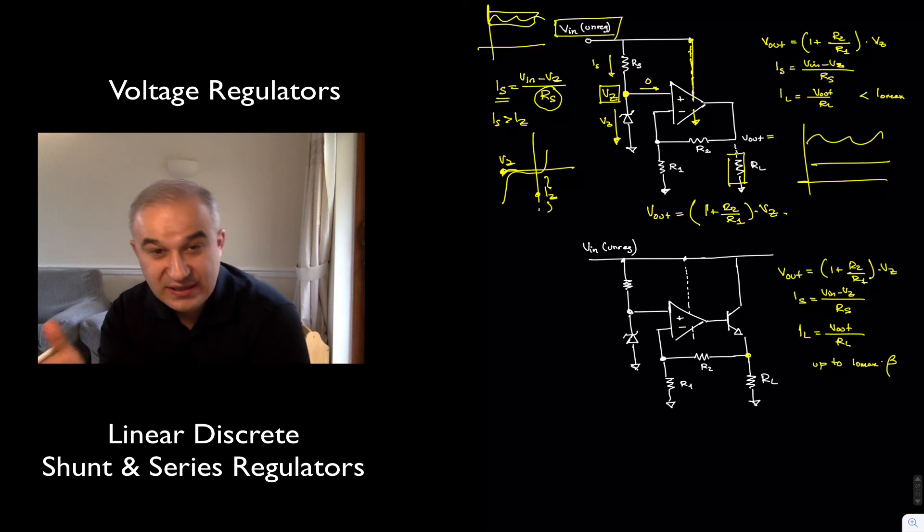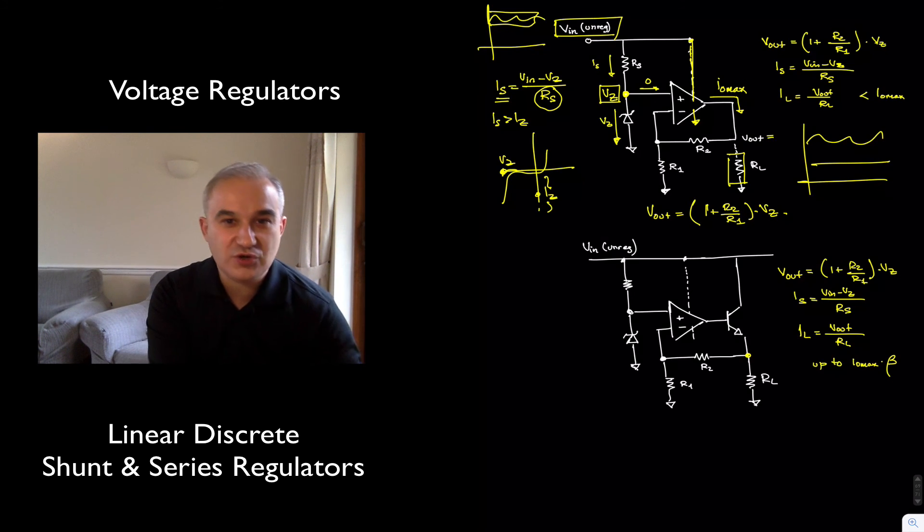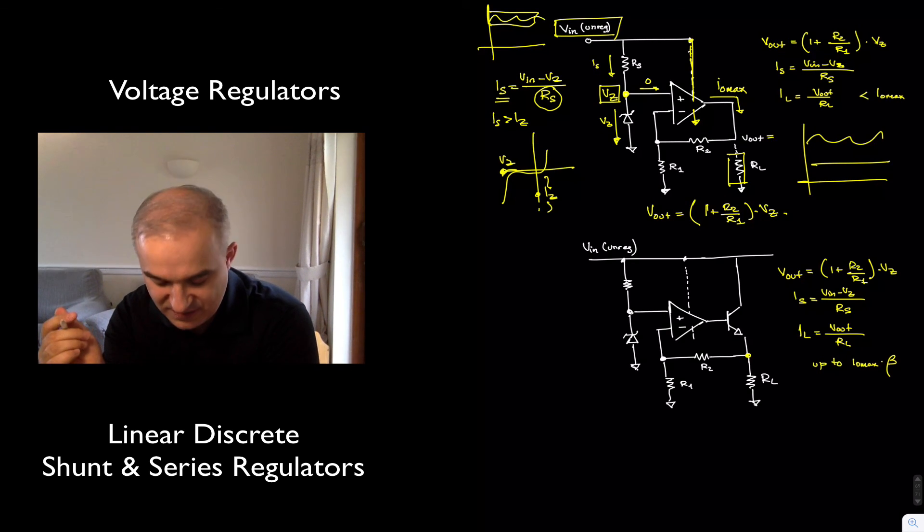Now, the main limitation of this circuit, this is going to work fine for low power, low current applications. But ordinarily, the operational amplifier has a maximum output current, which if you are using like the most basic general purpose op-amp, the 741, that's around 20 milliamps, 20 to 25 milliamps. And so that's the maximum current that you can provide to the load.